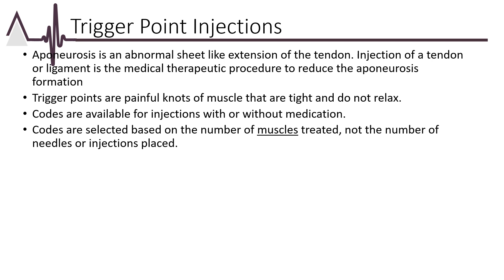Trigger points are painful knots of muscles that are tight and do not relax. Codes are available for injections into the muscles with medication, code range 20552–20553, and without medication, code range 20560–20561. Codes are billed based on the number of muscles treated, not based on the number of injections given. For example, if three injections are done into one muscle, we only bill for treatment of one trigger point. Make a note next to the trigger point injections reminding you that these are based on the number of muscles, not the number of injections used.